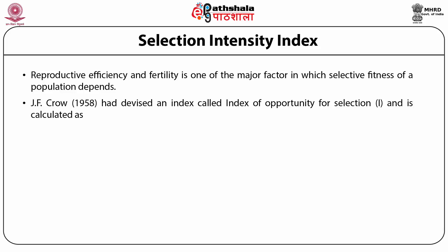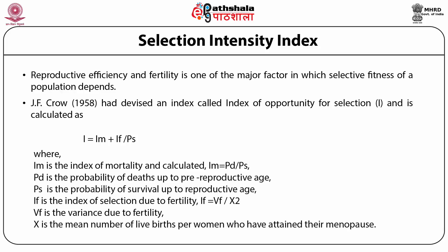Crow's index, or the index of opportunity for selection, is calculated as I = IM + IF/PS, where IM is the index of mortality, calculated as IM = PD/PS. PD is the probability of death up to pre-reproductive age, and PS is the probability of survival up to reproductive age. IF is the index of selection due to fertility, calculated as IF = VF/X², where VF is the variance due to fertility, and X is the mean number of live births per woman who has attained menopause.